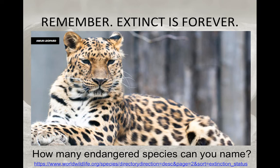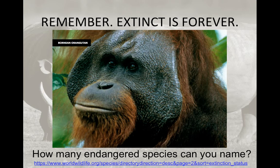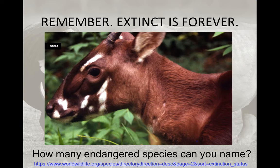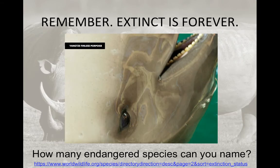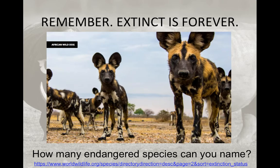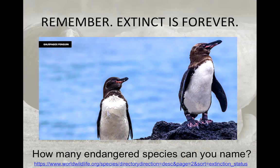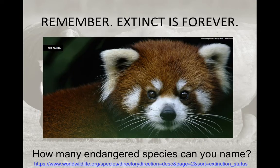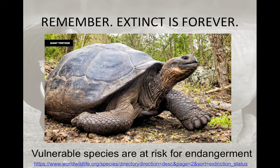I like to play a little game here to drive home that extinction is forever. How many endangered species are you able to name? With the help of the World Wildlife Federation, here are some examples: the Amur leopard, the black rhino, the Bornean orangutan, the Cross River gorilla, the saola, the Sunda tiger, the finless porpoise, the African wild dog, the Asian elephant, the bonobo, the Galápagos penguin.